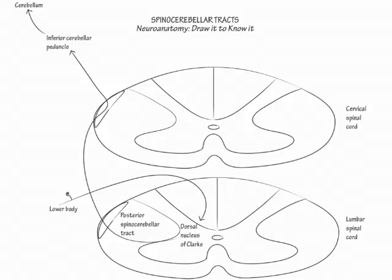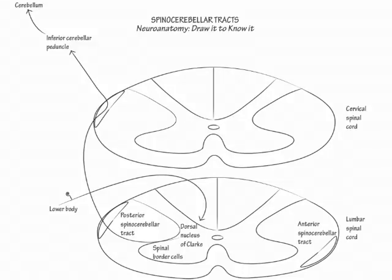Next, show that the anterior spinal cerebellar tract originates in spinal border cells in the lateral wall of the anterior horn of the lumbar spinal cord. These spinal cells lie at the L3 to L5 levels. Label the anterior spinocerebellar tract along the anterior lateral wall of the spinal cord.